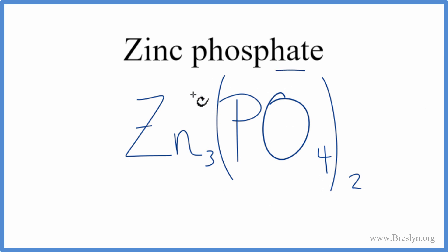Let's check our work, though. We said zinc is a 2-plus. It's always a 2-plus. The phosphate, that's a 3-.